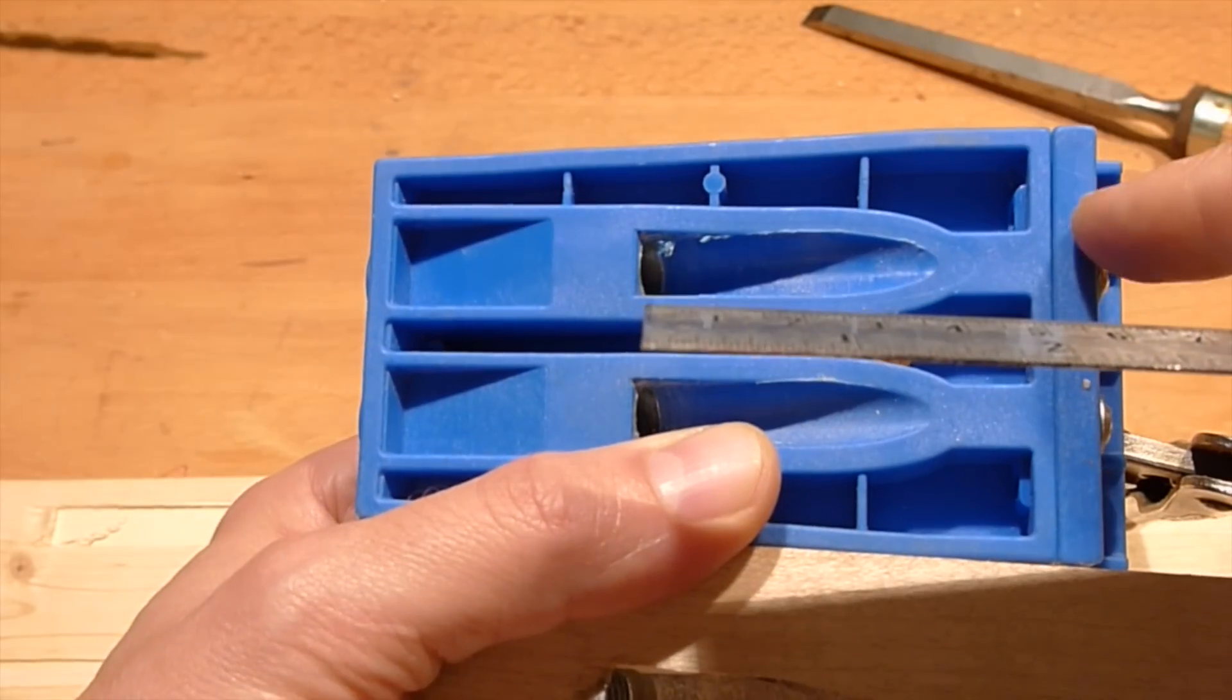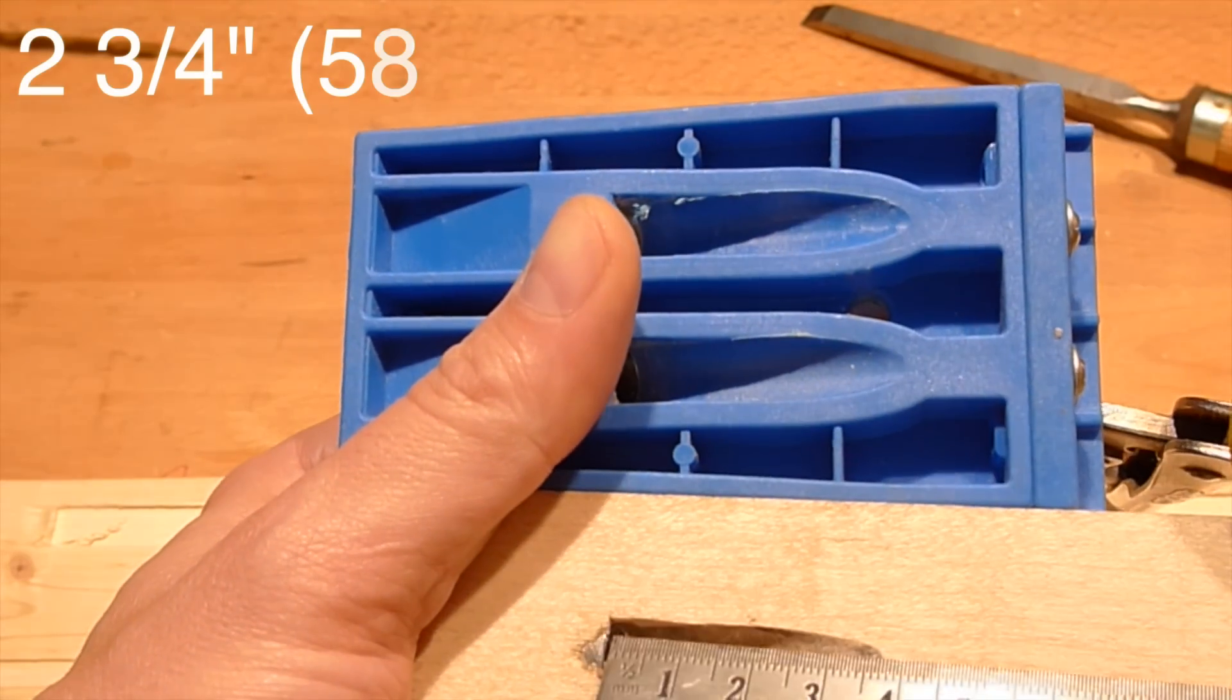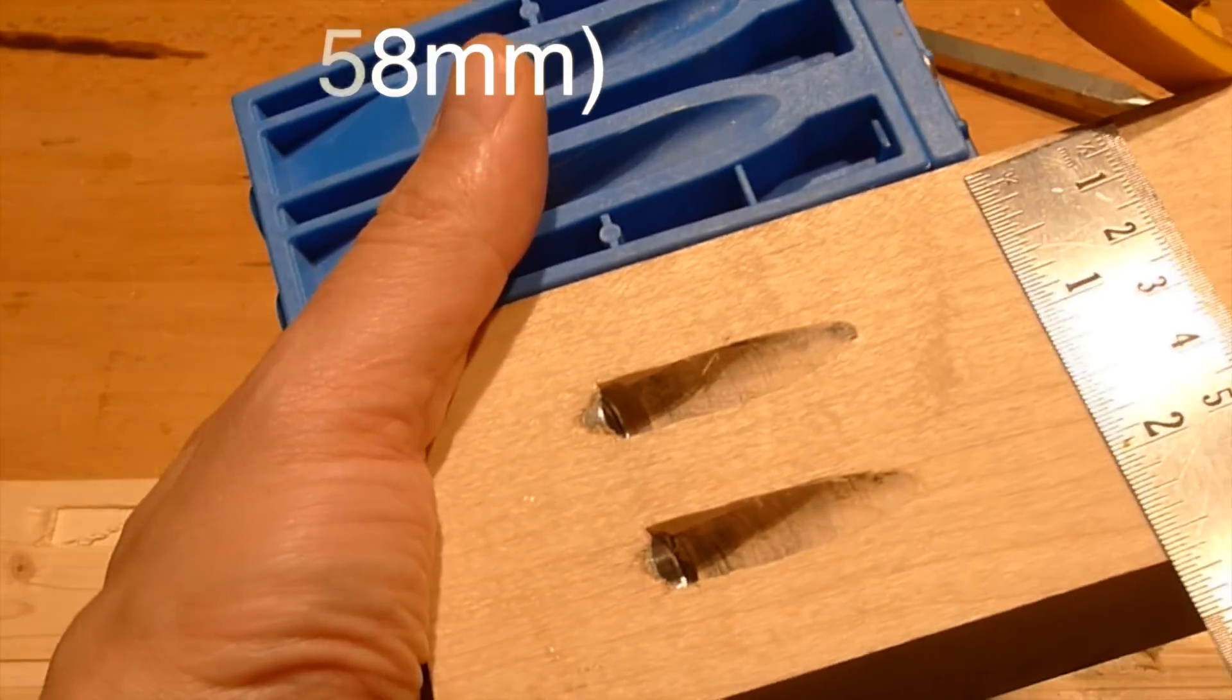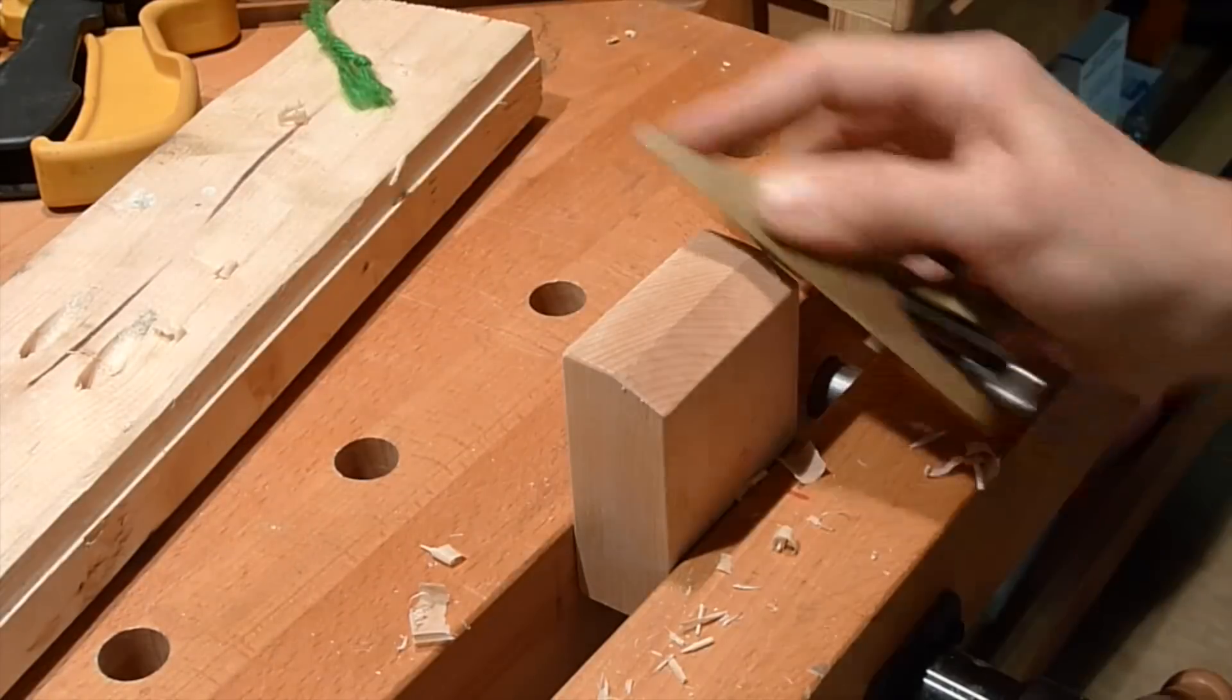Now I'm gonna cut the end about two and a quarter inch from the end of the insert, about 58 millimeters, because that's the guideline for three quarters of an inch stock.